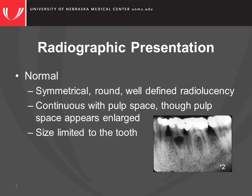Internal resorption is normally seen as a symmetrical, round, well-defined radiolucent lesion on a tooth. It is continuous with the root canal space, and the pulp space appears enlarged. It can be any size within the limits of a single tooth. If the root is perforated, the lesion stretches into the surrounding periodontal space.